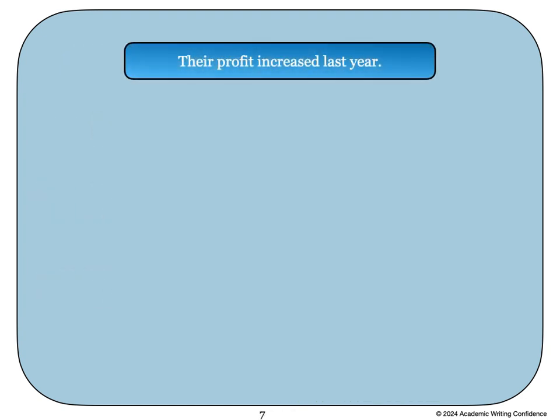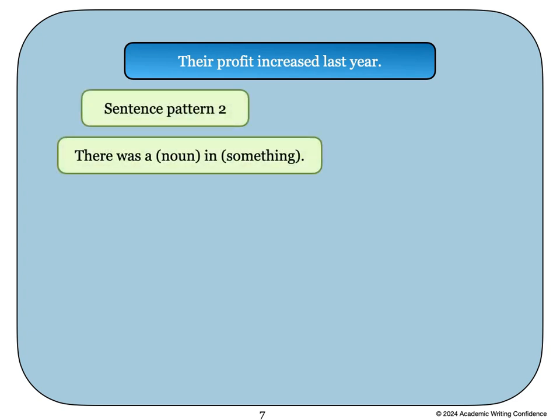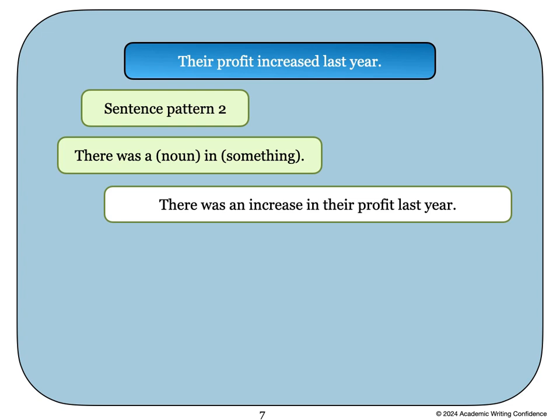There is a second sentence pattern that can also be used: There was a, and then we include a noun, in something. Our sentence above would change to this: There was an increase in their profit last year. The verb increased is changed to a noun, an increase. Then we add the word in, followed by the rest of the sentence, their profit last year.